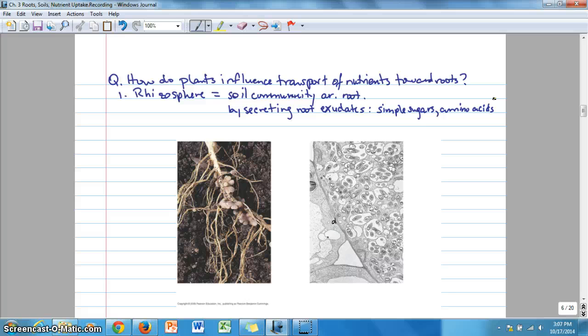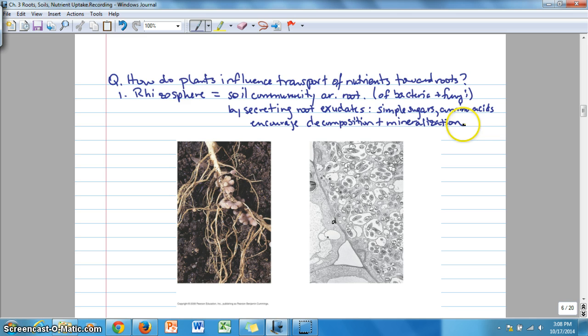Root exudates are basically things that supply food and energy and carbon for the surrounding community. It supports that soil community of bacteria and fungi and other components of the soil food web that would be feeding on these kinds of organisms to encourage activity around the root such as decomposition and mineralization, which we already talked about was a major form of supply or resupply of nutrients to the soil. This provides nutrients for the plant right nearby the root.